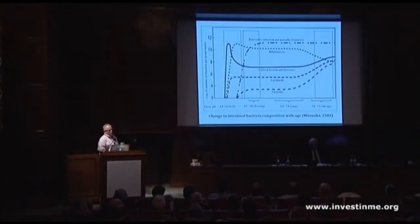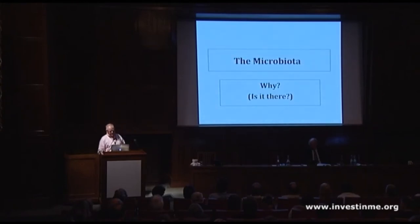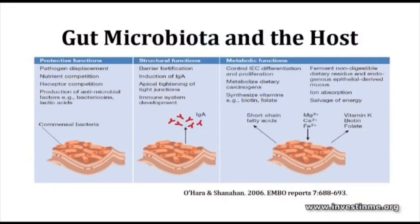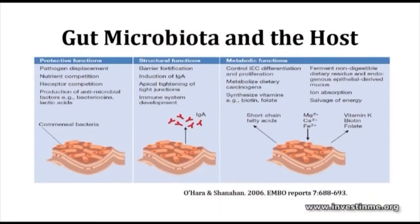Why is the microbiota there? Three primary criteria are fulfilled. First, a protective function: they prevent colonization by filling space in the gut limiting pathogen colonization, depriving pathogens of nutrients, and producing antimicrobials that can kill pathogens. Second, a structural function: they help promote and maintain the intestinal barrier, stimulate growth and turnover of epithelial cells, are important for stimulating maturation of the immune system, and help regulate the junctions sealing adjacent epithelial cells.